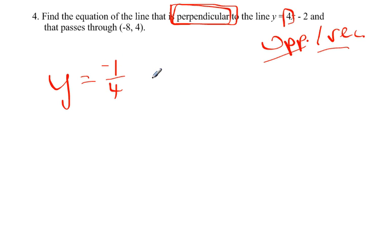If it was negative, make it positive. If it's positive, make it negative. X plus b. And then do the same thing we did before. So plug in their 4 for y, negative 8 for x plus b.